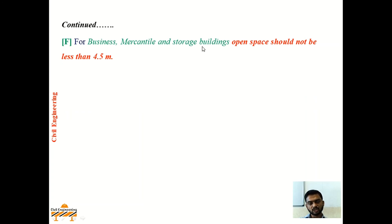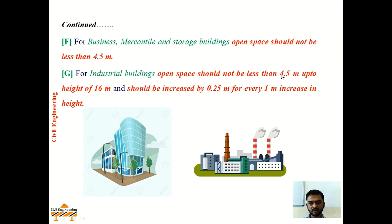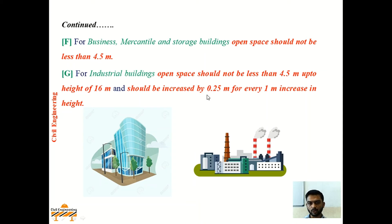For business, mercantile, and storage buildings — that is shopping complexes, offices, and storage buildings — open spaces should not be less than 4.5 meters in any case. For industrial buildings, open spaces should not be less than 4.5 meters up to a height of 16 meters. If the industrial building height is greater than 16 meters, then open spaces should be increased at the rate of 0.25 meters for every 1 meter increase in height. For example, if height is 17 meters, open space will be 4.5 + 0.25 meters.